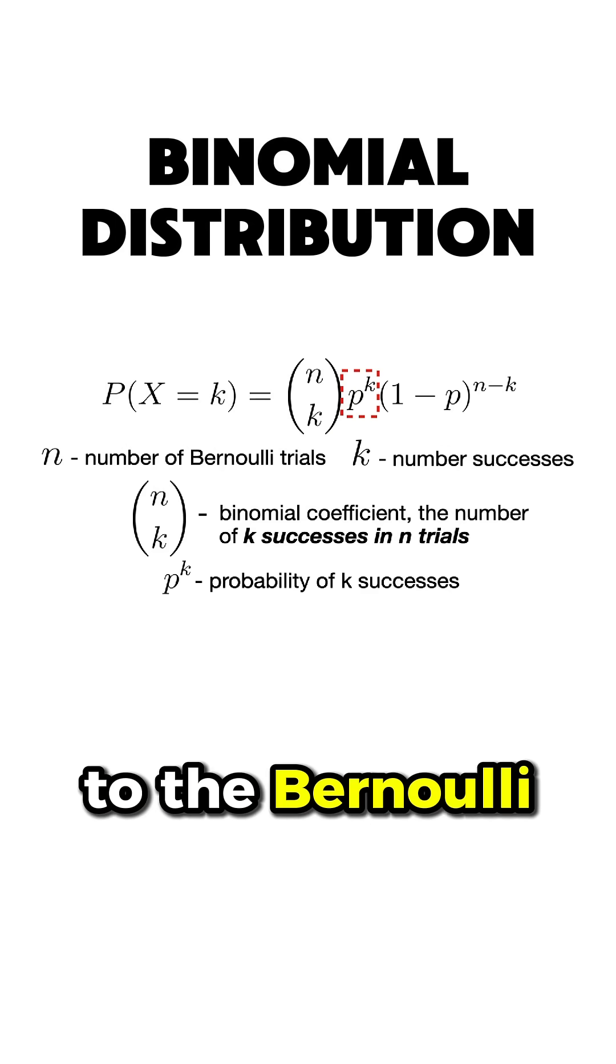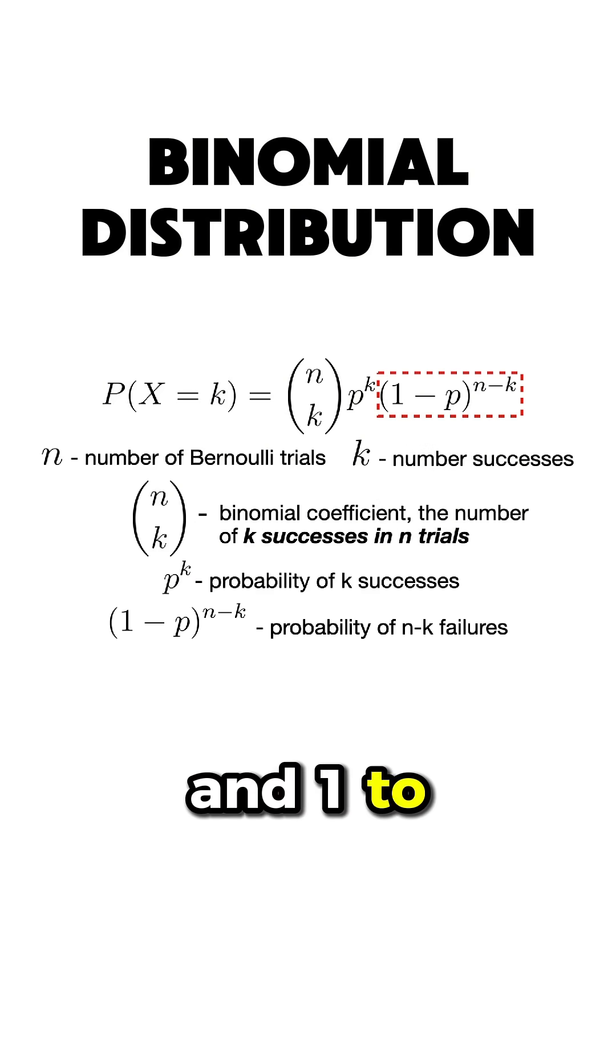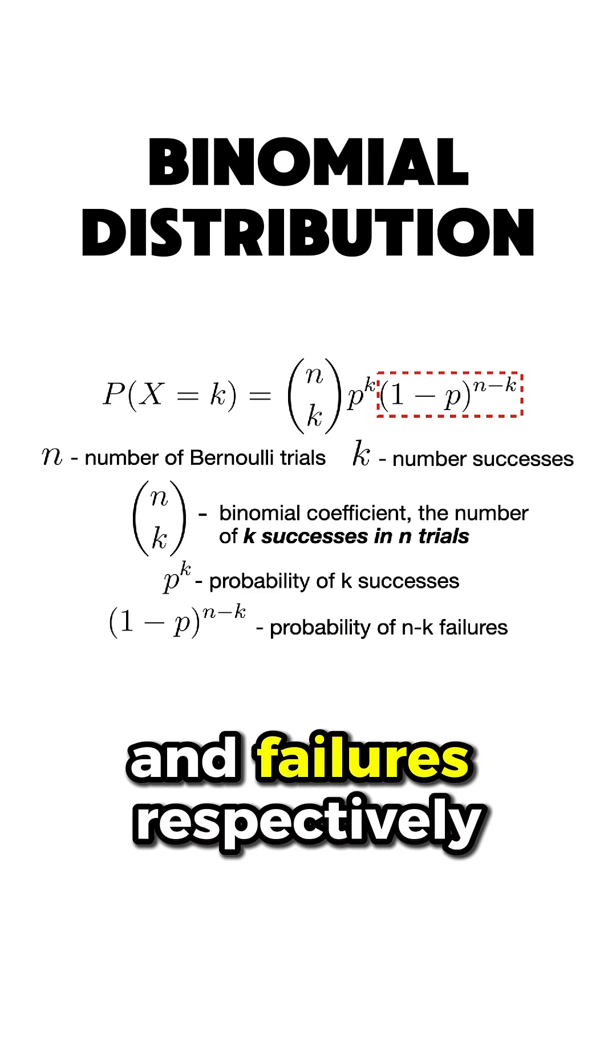Finally, quite similar to the Bernoulli distribution, we have p to the power of k and (1 minus p) to the power of (n minus k), which represent the probability of successes and failures, respectively.